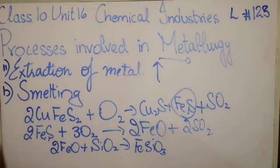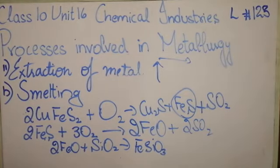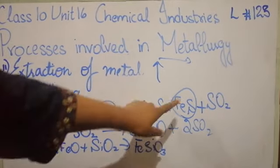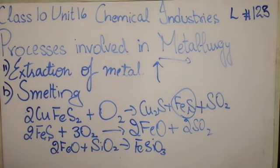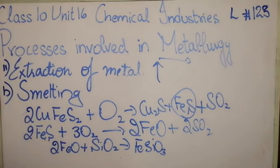This ferrous oxide reacts with silica or sand to form iron silicate slag. Because the iron silicate slag is lighter in weight, it rises to the top and is collected from there. Now, as for the cuprous sulfide — it will also be oxidized to form cuprous oxide, and it reacts with unreacted ferrous sulfide. In this way, cuprous sulfide and ferrous sulfide form a molten mixture called matte, which is withdrawn from the bottom — the lower hole — and contains about 45% copper.